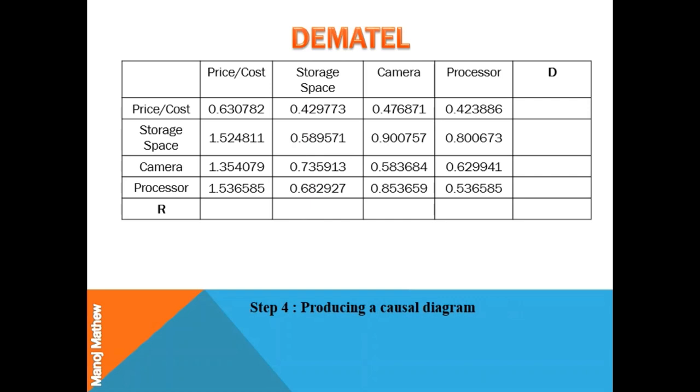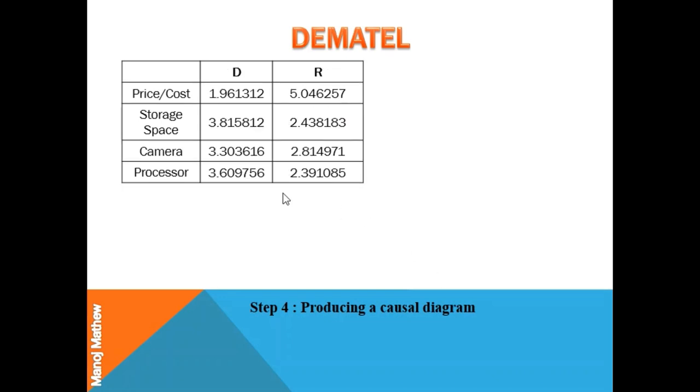Next, we calculate D which is the sum of the row and R which is the sum of column. On adding all these values, you will get this value. Similarly, you can get all other values by adding all the elements of the row. Now, adding all the values in the first column, you will get this value that is 5.046257. Similarly, you can get all other values by adding all the elements in the column. Now, these are the D and R values of each criteria.